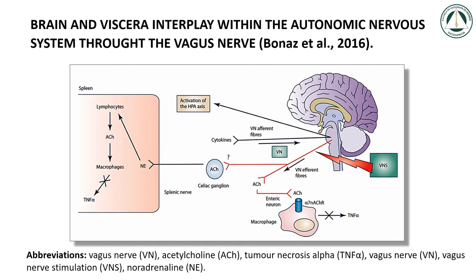Acetylcholine binds to alpha-7 nicotinic acetylcholine receptors of those macrophages, to inhibit the release of tumor necrosis factor alpha, TNF-alpha, a pro-inflammatory cytokine. The last pathway is the splenic-sympathetic anti-inflammatory pathway, where the vagus nerve stimulates the splenic sympathetic nerve. Norepinephrine, or noradrenaline, released at the distal end of the splenic nerve, links to the beta-2 adrenergic receptor of splenic lymphocytes that release acetylcholine. Finally, acetylcholine inhibits the release of tumor necrosis factor alpha by spleen macrophages, through alpha-7 nicotinic acetylcholine receptors.